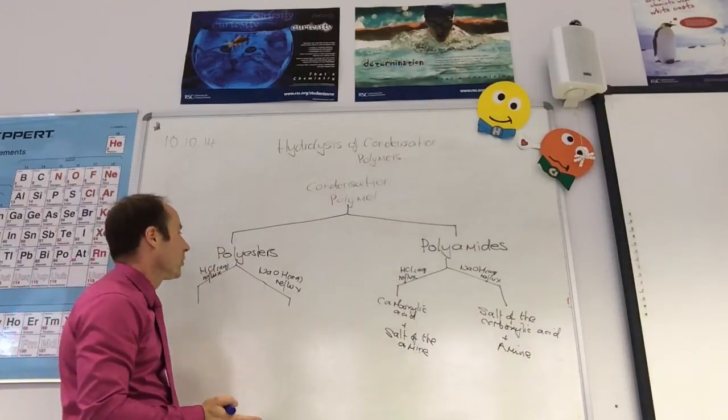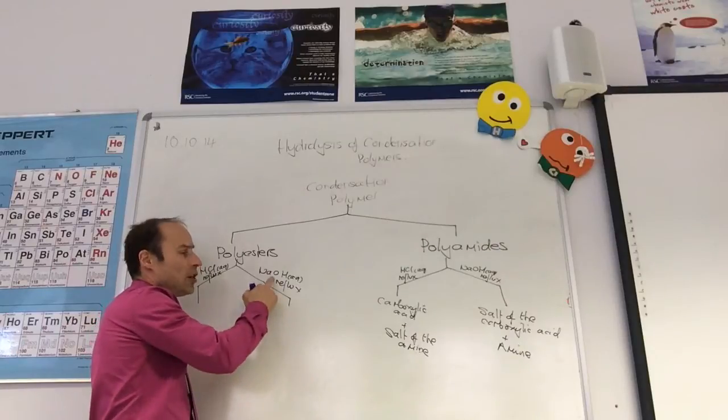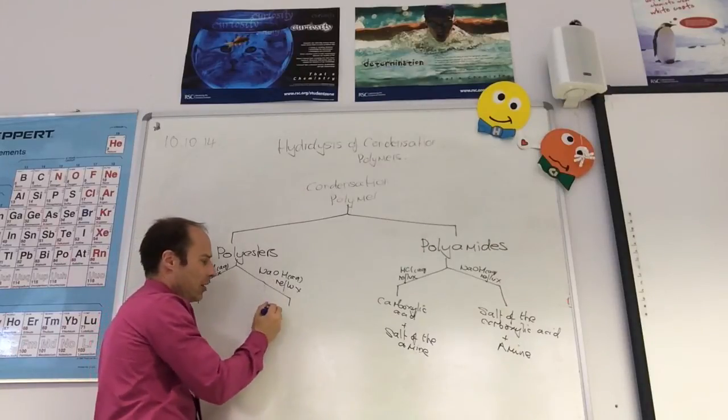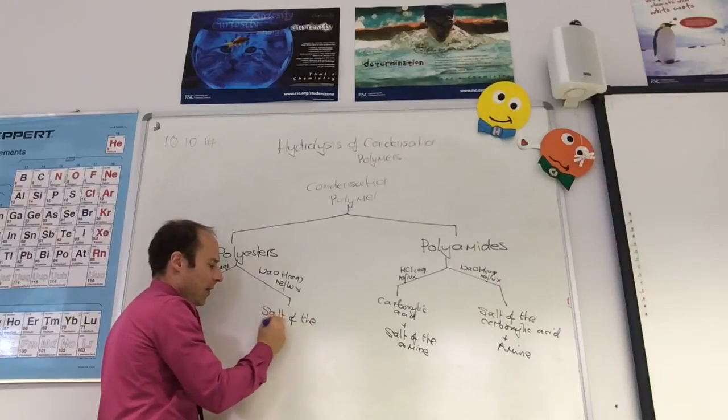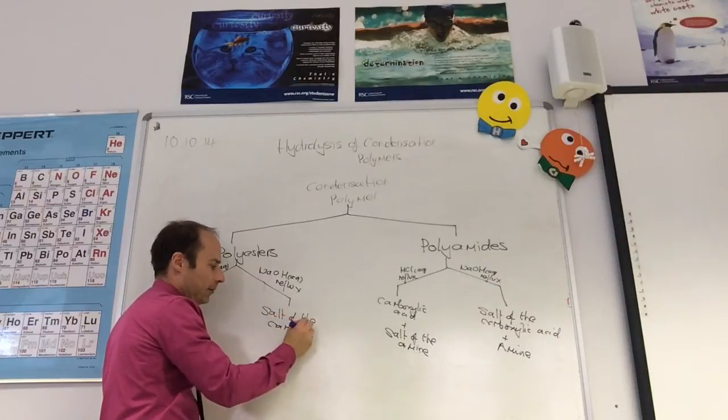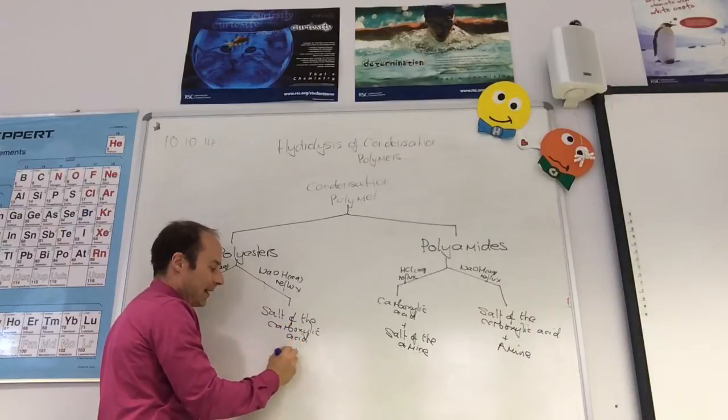If I'm looking at polyesters now, if I use sodium hydroxide solution, I will make the salt of the carboxylic acid, and I'll also make the alcohol.